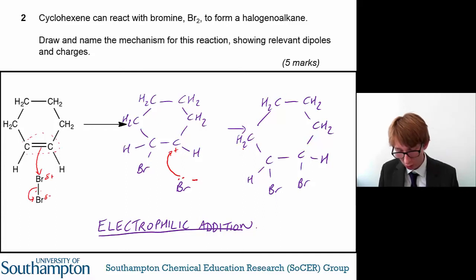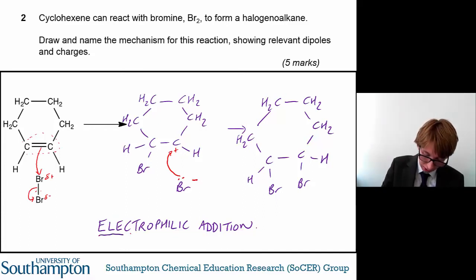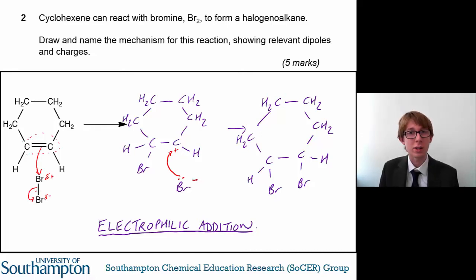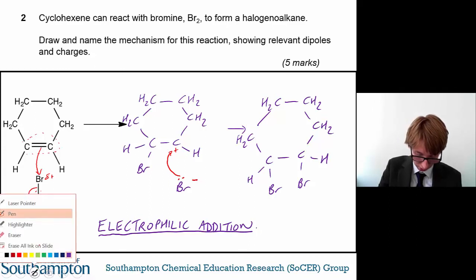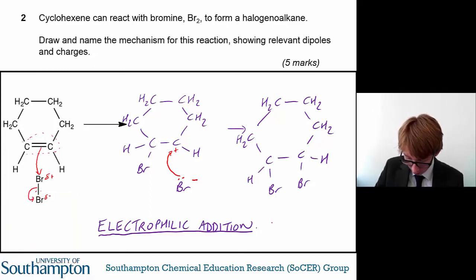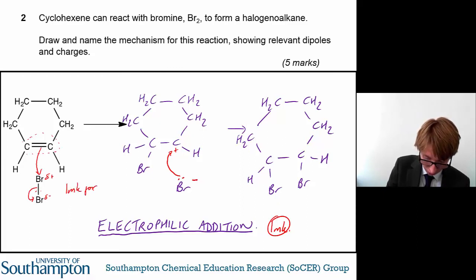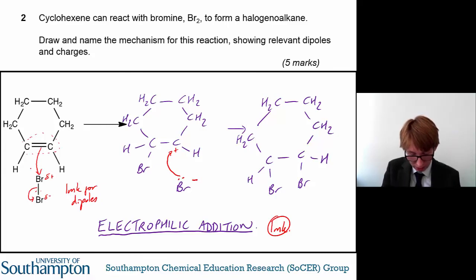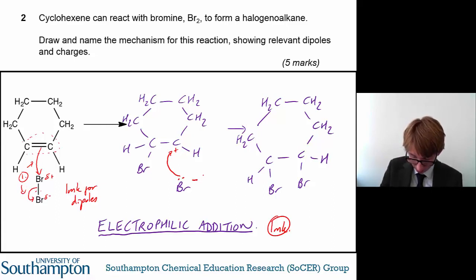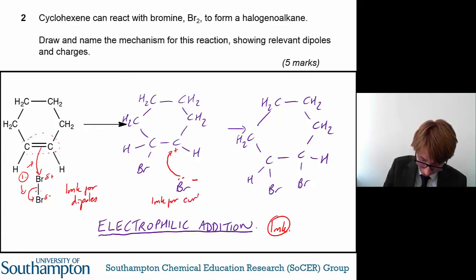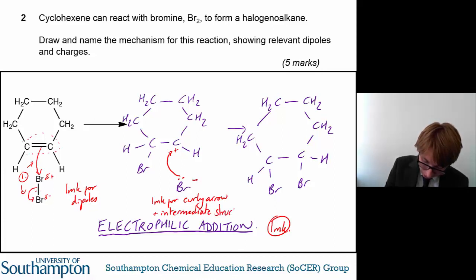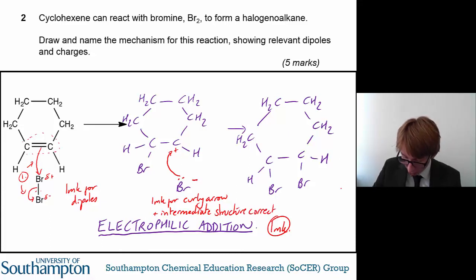So where do your marks go? You get one mark for the name of the mechanism — electrophilic addition. You get one mark for the dipoles on the bromine. You get one mark for the first two curly arrows. You get one mark for the curly arrow and the intermediate structure in the second step. And you get one mark for the correct product structure.